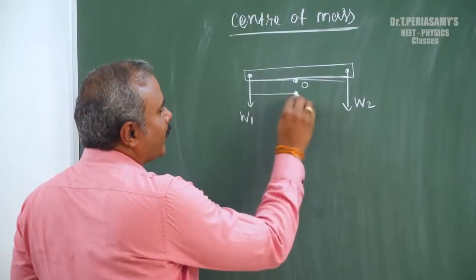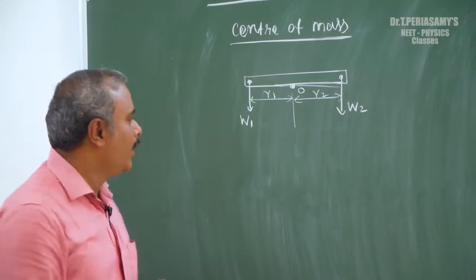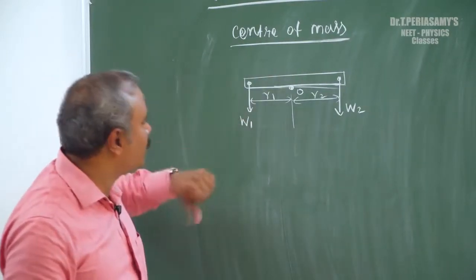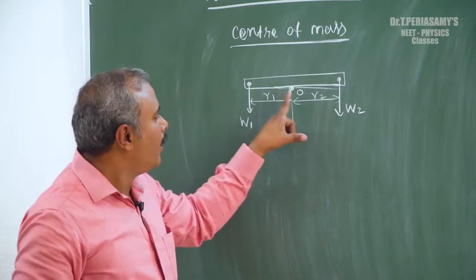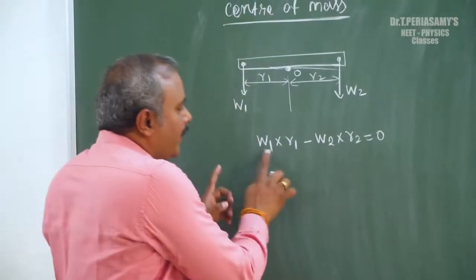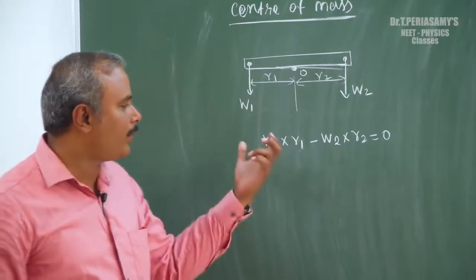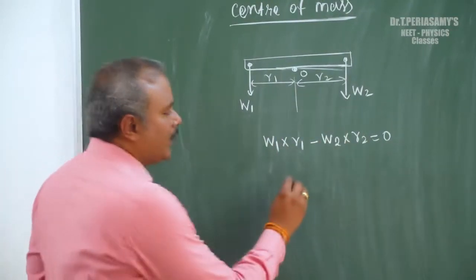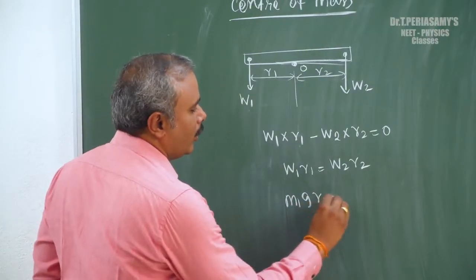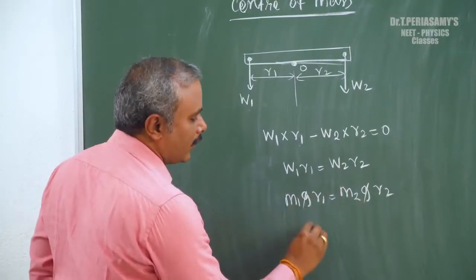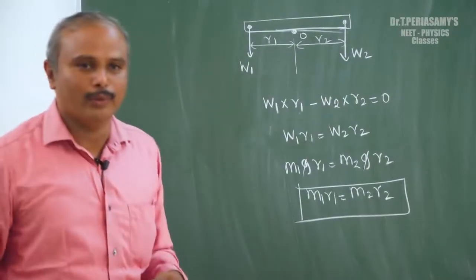Taking the center point O, the moment created by W1 with respect to O is W1 × R1, which is the anti-clockwise moment. Minus W2 × R1 is the clockwise moment. Anti-clockwise moment is positive and clockwise moment is negative. So we get W1·R1 = W2·R2, which gives us M1·g·R1 = M2·g·R2, and cancelling g: M1·R1 = M2·R2.